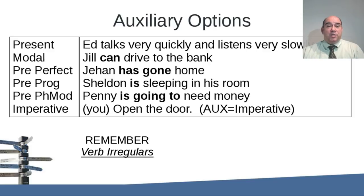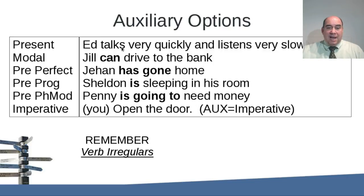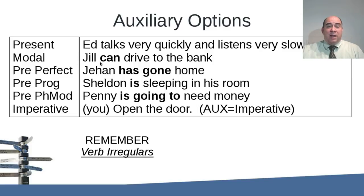Let's take a look at some of the options that are available for auxiliary verbs. In the present tense here, we see we've got no auxiliary — just the word 'talks' or 'listens' with morpheme added to the verb. With modals, we're going to add an auxiliary — a possibility like can, may, might, must, or should. For example, Jill can drive to the park — that's an auxiliary option. You can have a modal, and you can have things like the present perfect.